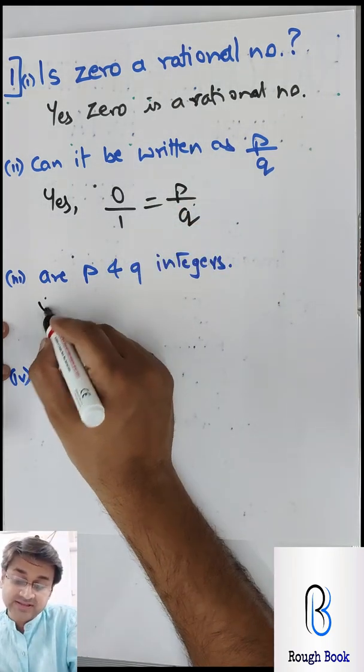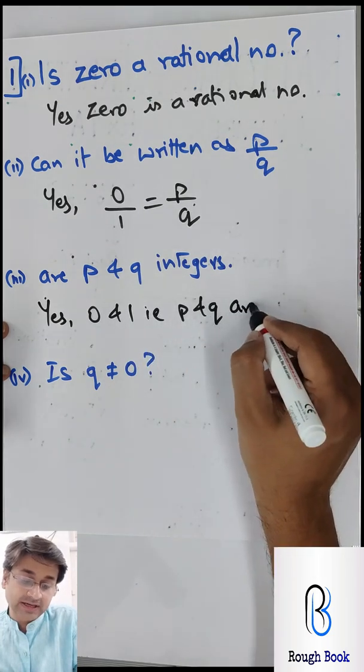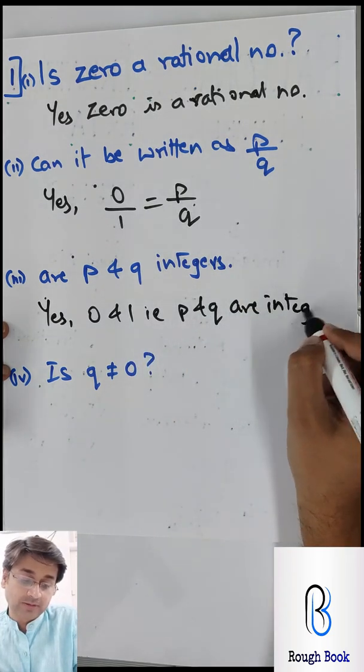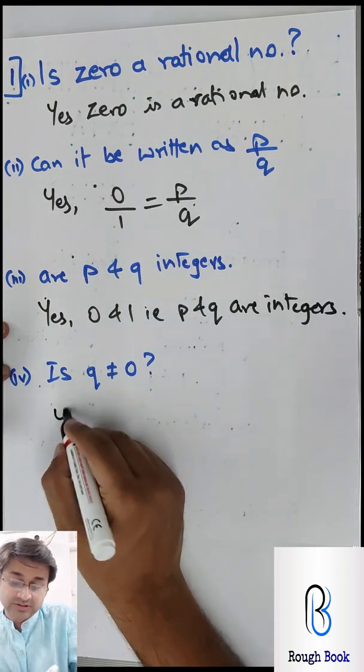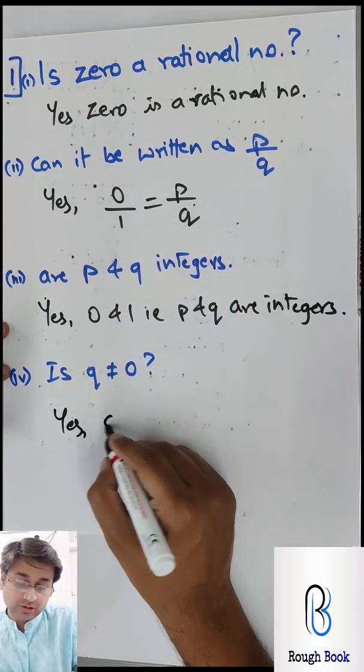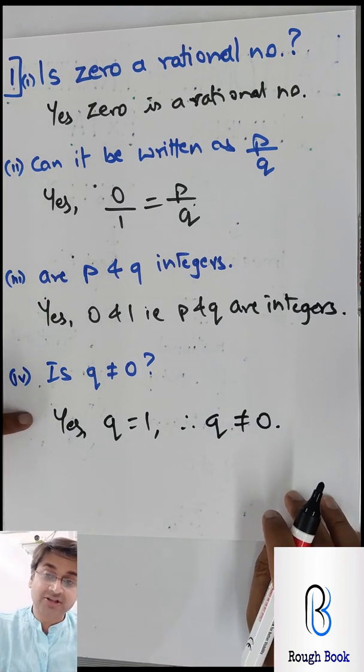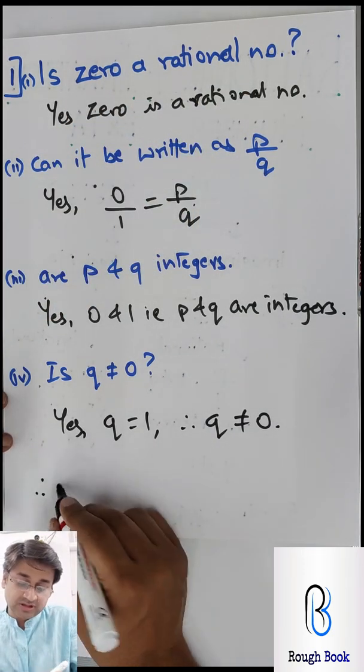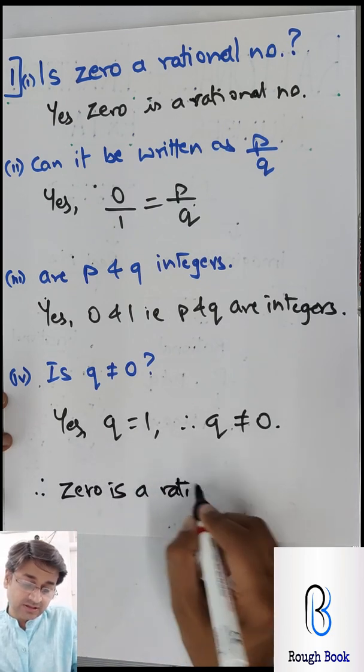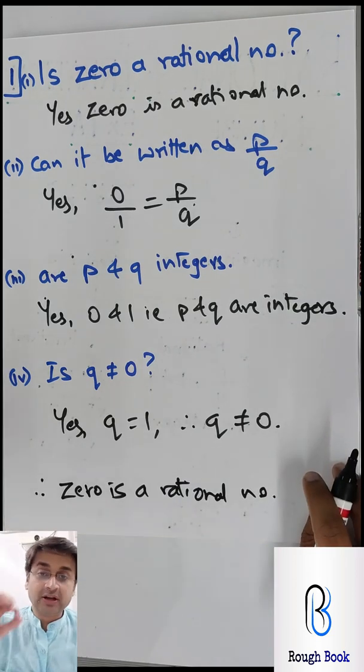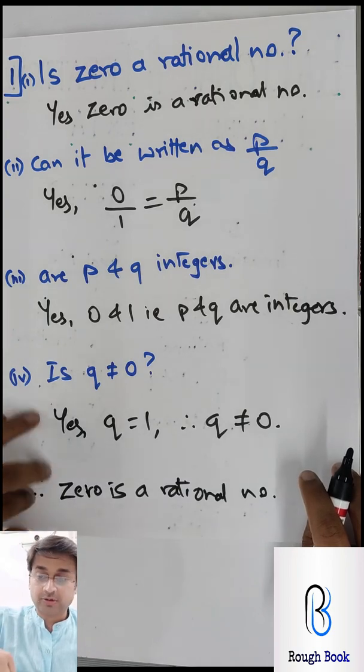Are p and q integers? Yes. 0 and 1, that is p and q, are integers. No problem at all. And further the last part: Is q not equal to 0? Yes. Because q is equal to 1 and therefore q is not equal to 0. So since all the three conditions are there, therefore it becomes a rational number. So you say therefore 0 is a rational number. Do you understand now? So whenever you want to say whether a number is rational or not, these three properties should be followed.